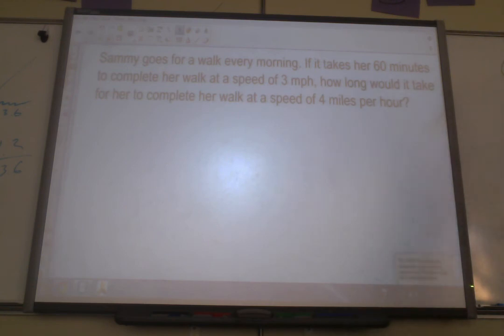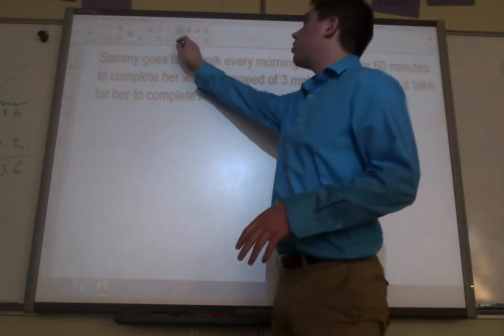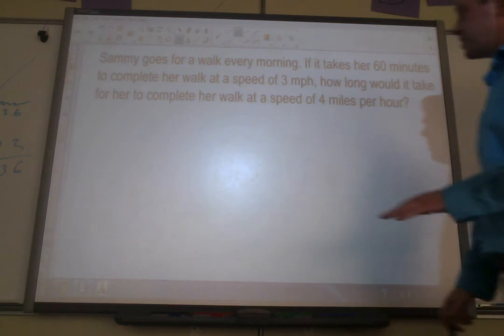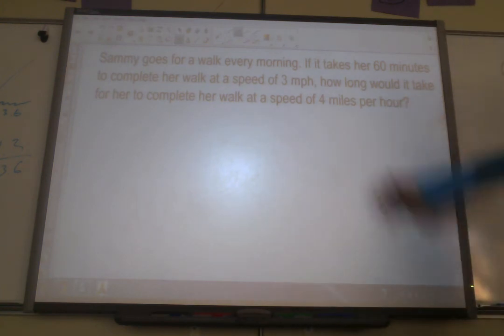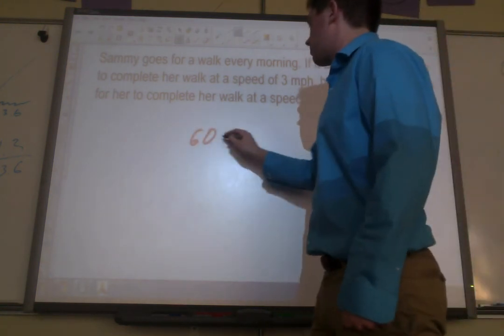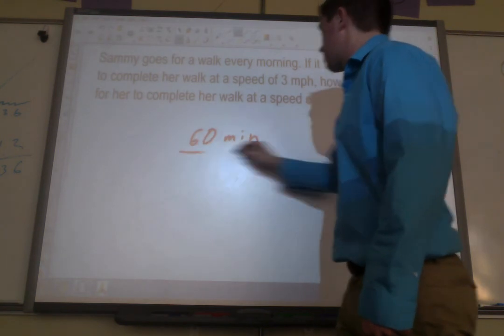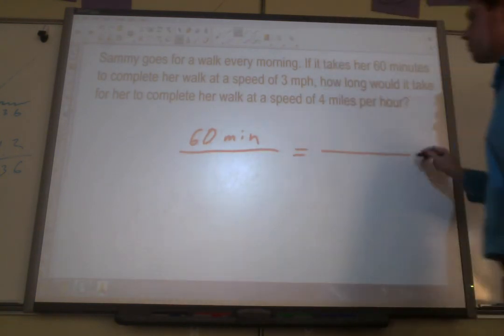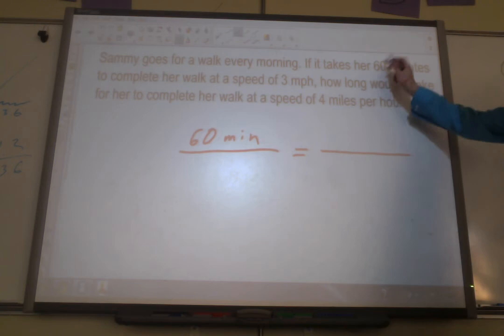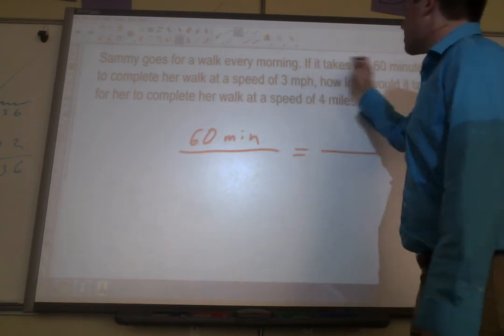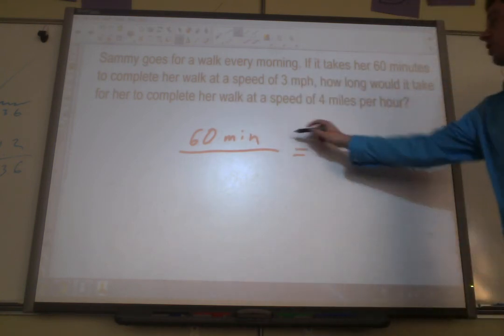It says Sammy goes for a walk every morning. If it takes her 60 minutes to complete her walk at a speed of 3 miles per hour, how long would it take for her to complete her walk at a speed of 4 miles per hour? Okay, so remember, first step, we just totally treat it like normal and set up the proportion. So first it takes her 60 minutes. And 60 minutes, that's if she's going at 3 miles per hour. So if 60 goes with the 3 miles per hour, she's got to keep them across from each other.